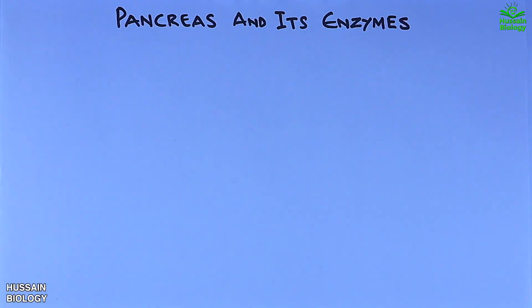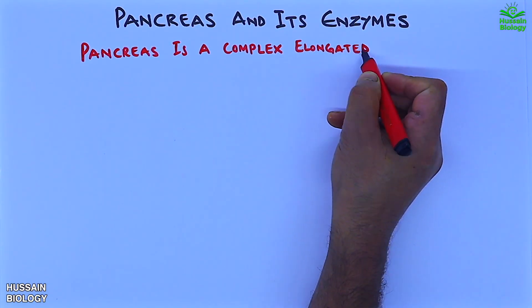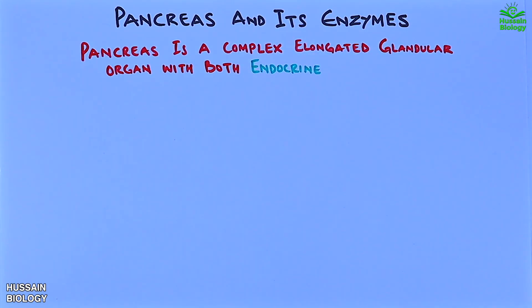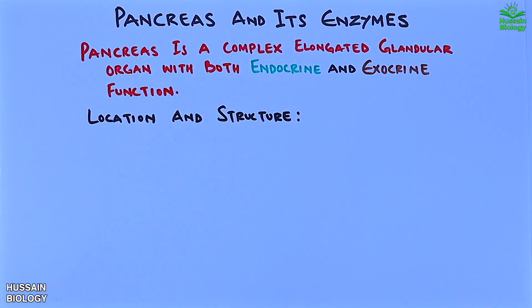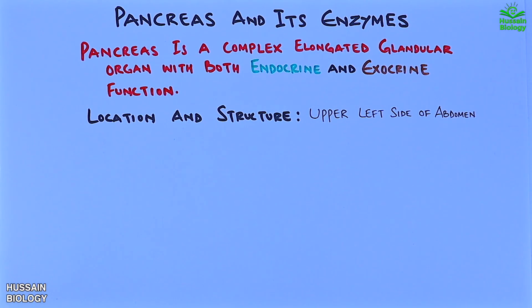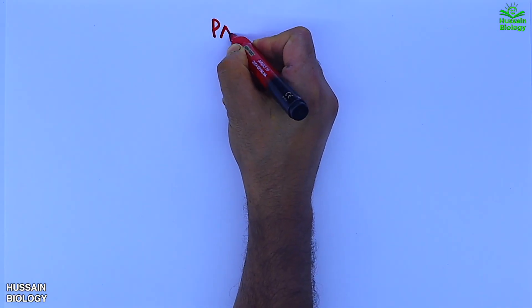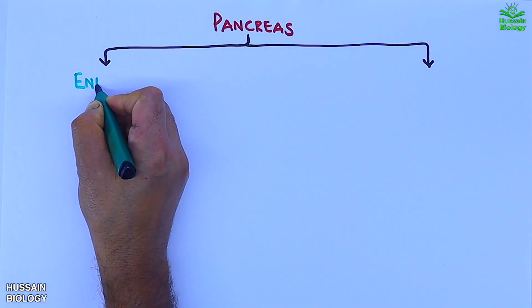In this video we are going to discuss about the pancreas and its enzymes. The pancreas is a complex elongated glandular organ with both endocrine and exocrine functions. It is located at the upper left side of the abdomen, and in its structure we can see the head, neck, body, and tail. The detailed structure won't be discussed here as we are dealing with enzymes only.